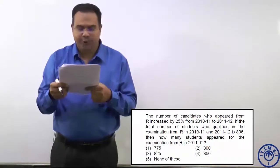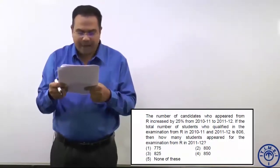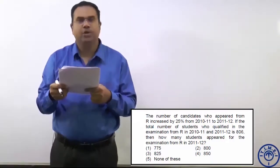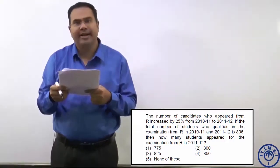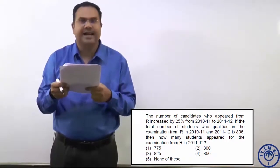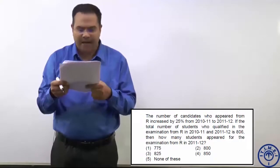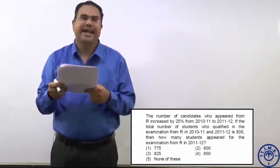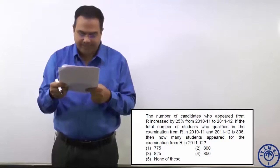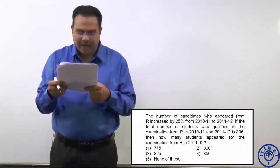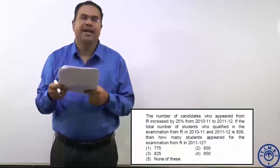Next question. The number of candidates who appeared from R increased by 25 percent from 2010-11 to 2011-12. If the total number of students who qualified in the exam from R in 2010-11 and 2011-12 is 806, then how many students appeared for the exam from R in 2011-12?